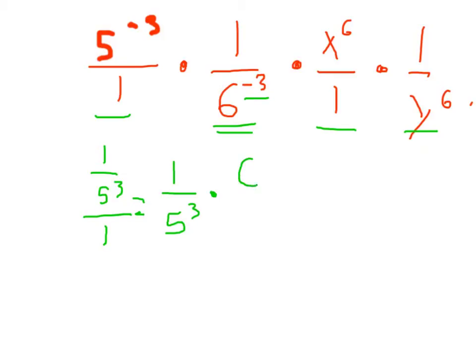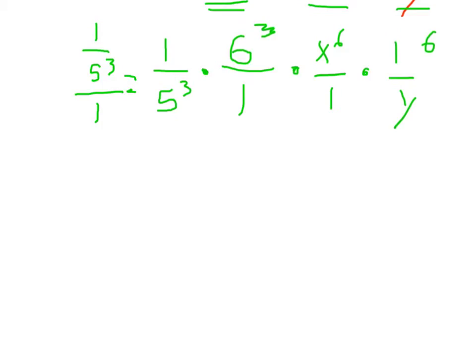So on this one, we have 6 to the 3rd over 1 times x to the 6th over 1 times 1 over y to the 6th. Alright, now we can still reduce the 5 to the 3rd and the 6 to the 3rd more, because we know what those exponents are.